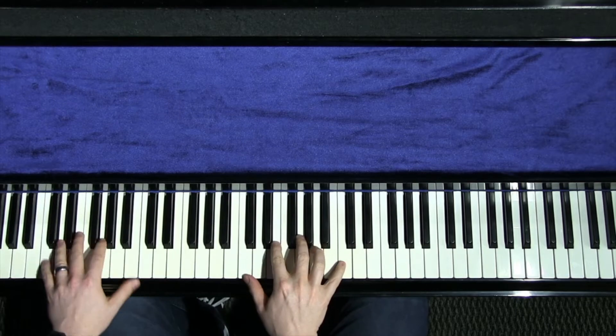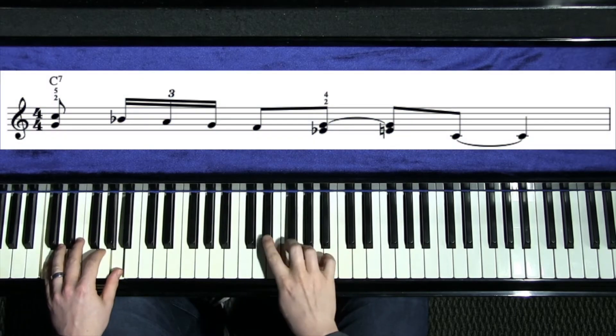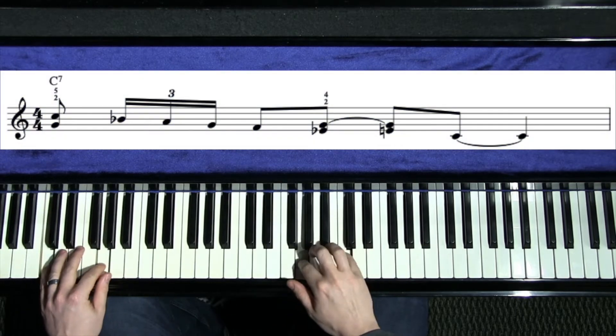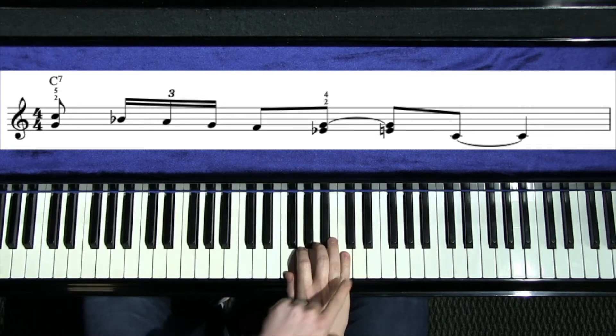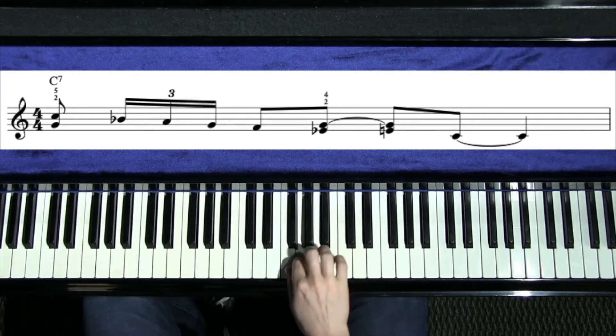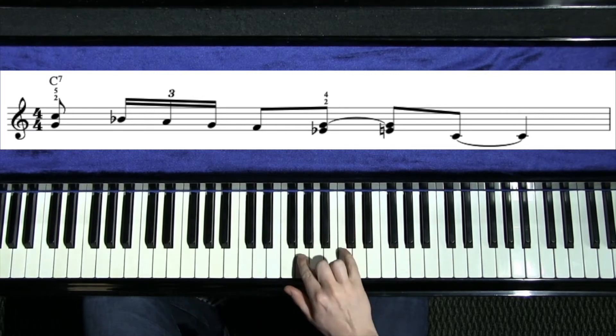And so the lick itself is this. It's this right hand. It's called the dominant slide because it kind of slides down through the dominant scale, which is this C major with a B flat.